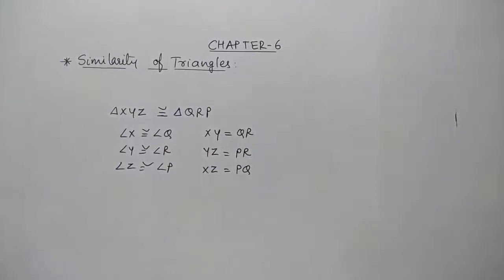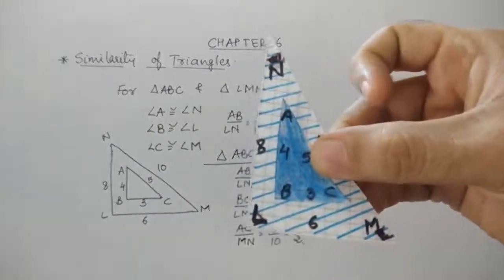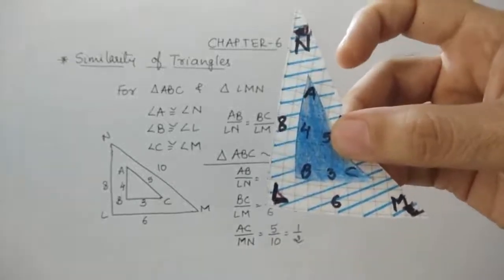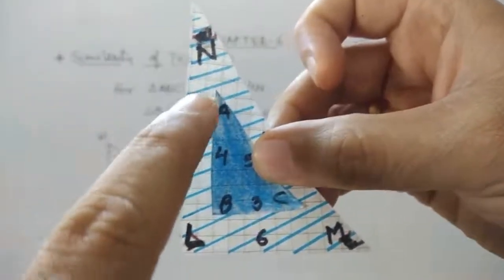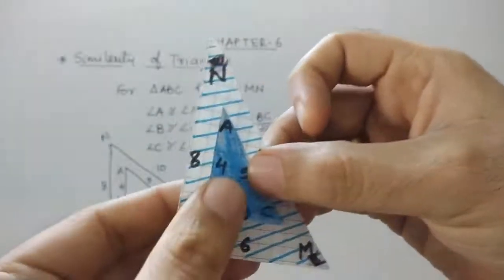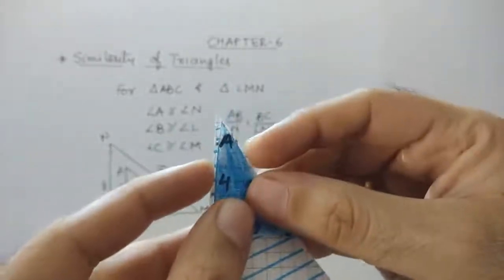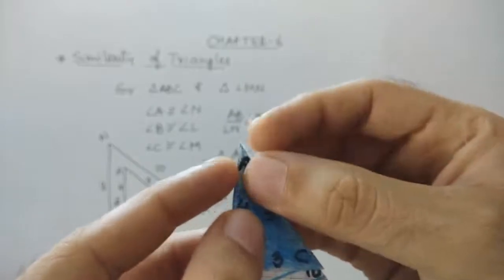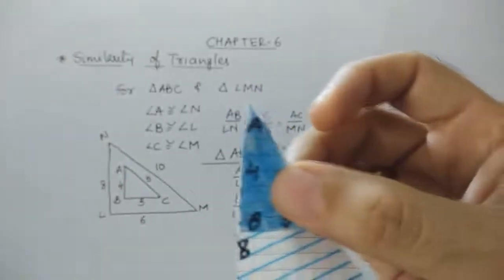Now let us discuss about similar triangles — the similarity of triangles. Here I have two triangles in my hand: triangle LMN, which is the larger one, and triangle ABC, which is smaller. Both are right-angle triangles. First I want to show the corresponding angles. When I merge angle A and angle N, you can see both angles are the same — they are overlapping. So the measure of angle A and angle N are equal.